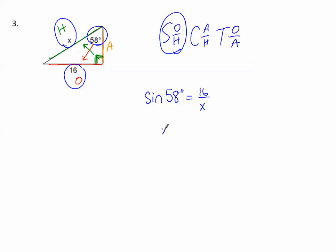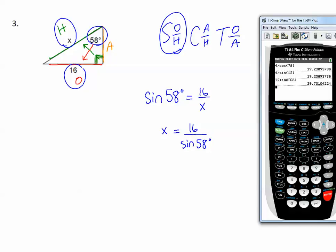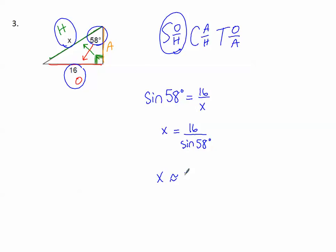See the x's on the bottom, so I do interchange. Put x on top, divide by the sine of 58 degrees. Pull out my calculator. 16 divided by sine of 58. And it said round to the nearest tenth. So the 8, next to it is a 6, makes that 8 go to a 9. 18.9. x is approximately 18.9.